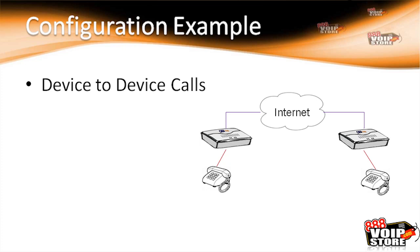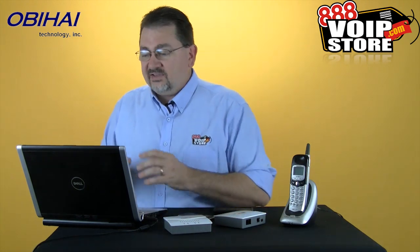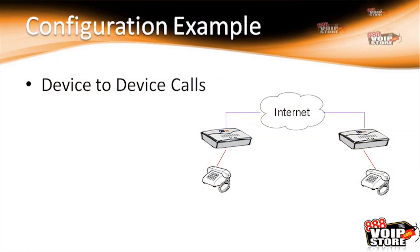In this first slide, we've got two OBi110s with analog phones plugged into them, both connected to the internet. One phone can simply call the other one by using the OBi talk number. Every device and every app has its own OBi number printed right on the back — it's a nine-digit number you can use to dial device to device. As soon as you plug these devices into a network with analog phones connected, you can dial the OBi number and connect to the other one, making it very simple to create a peer-to-peer network.